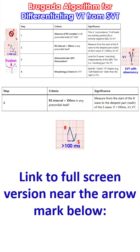Step 2: Measure from the start of the R wave to the deepest part, or nadir, of the S wave. The horizontal distance between these two points — if it is more than 100 milliseconds, it is suggestive of ventricular tachycardia.